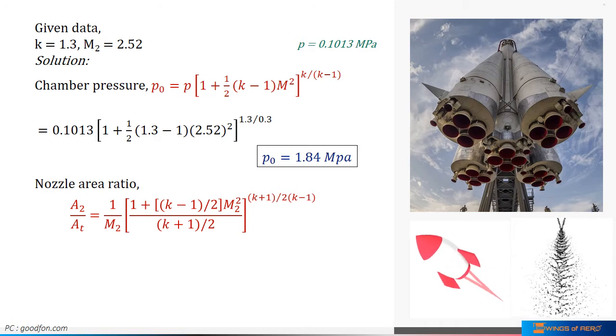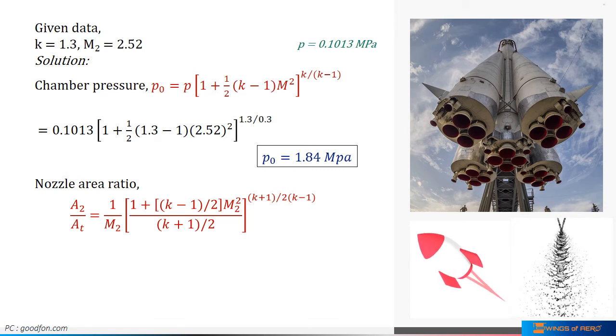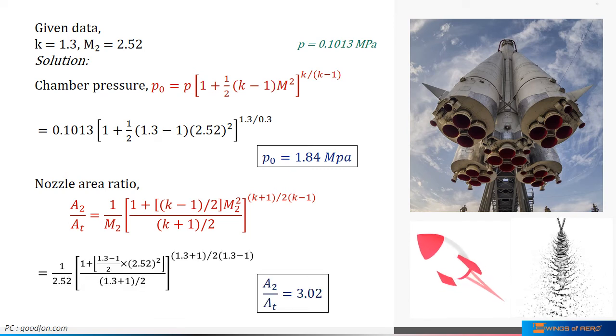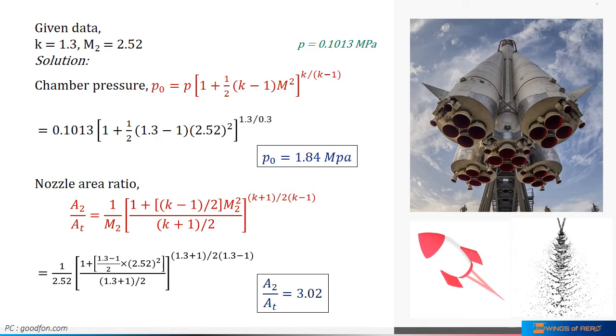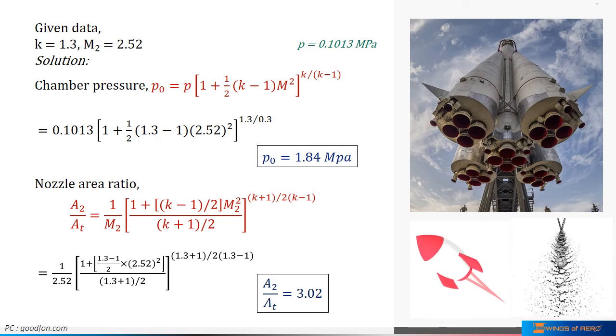Where, k is the specific heat ratio and M2 is the exit Mach number. Now, substitute the known values and simplify. We get the required nozzle area ratio is 3.02.